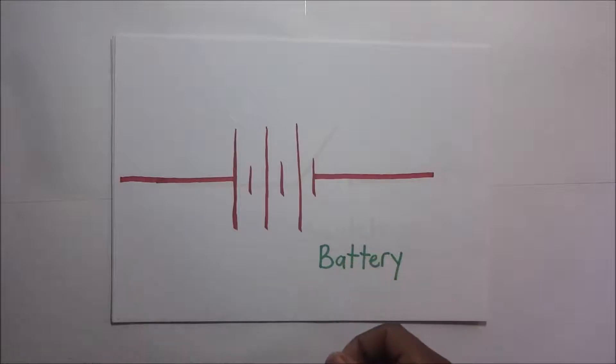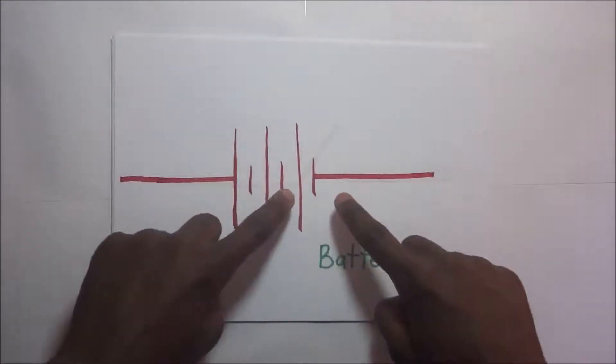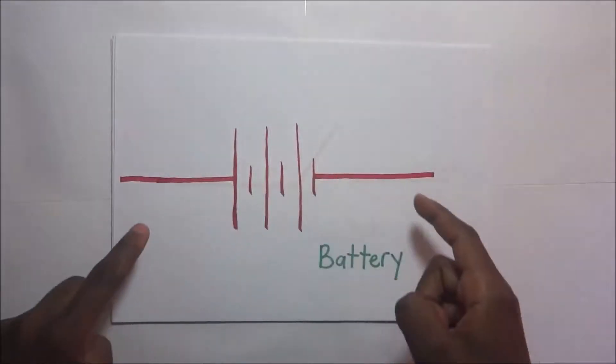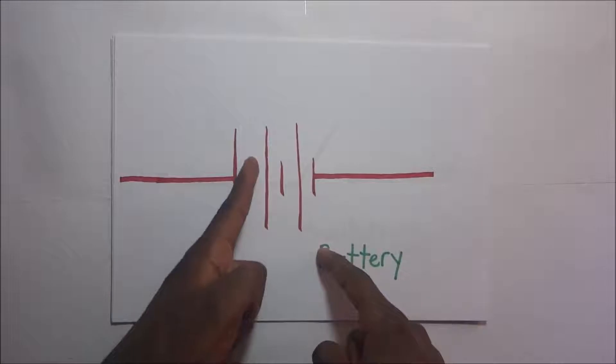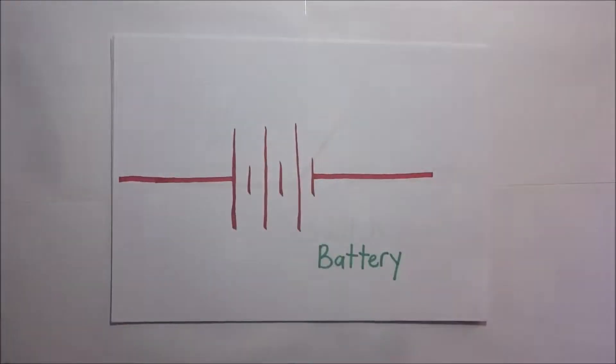This battery has three cells because we have one cell there, the second cell there, and the third cell. Every terminal: this is positive, that's negative, this is positive, negative, positive, negative. That's a battery for you. Next, we connect these batteries to a switch.